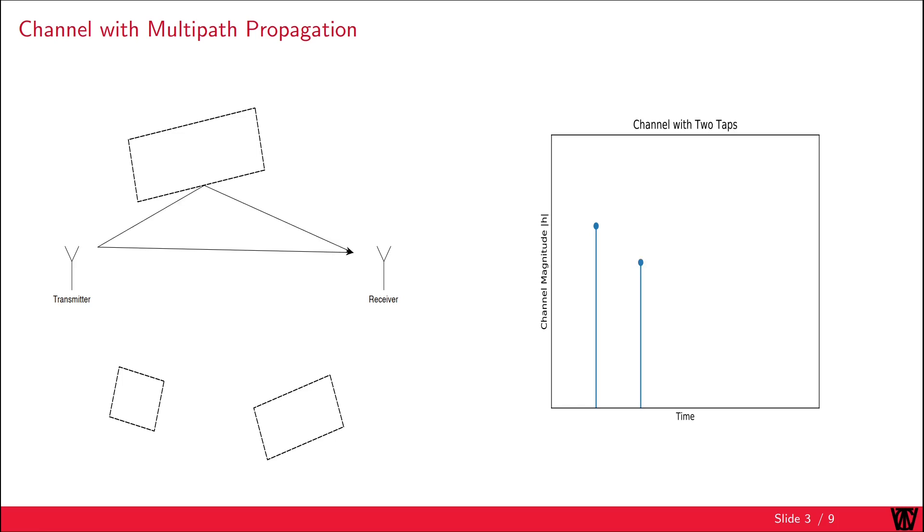If we consider a second path which has a longer distance than the first path due to reflections, we get a delayed echo of the transmitted signal. This results in an additional tap in the channel. Considering more paths would then result in more channel taps. Note that the channel magnitude does not have to decrease monotonically as there could be multiple paths with the same delay.